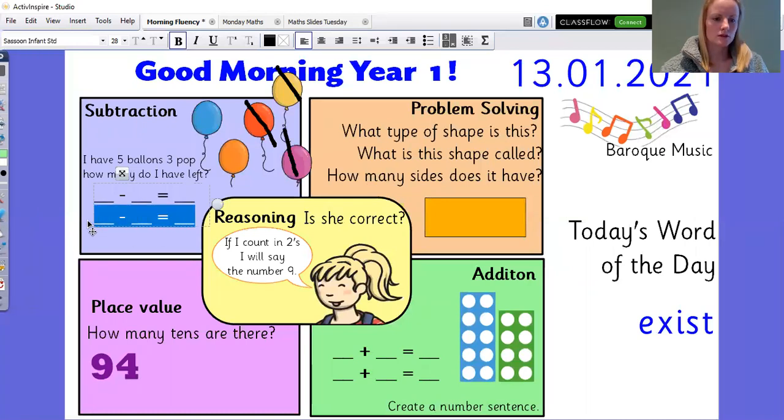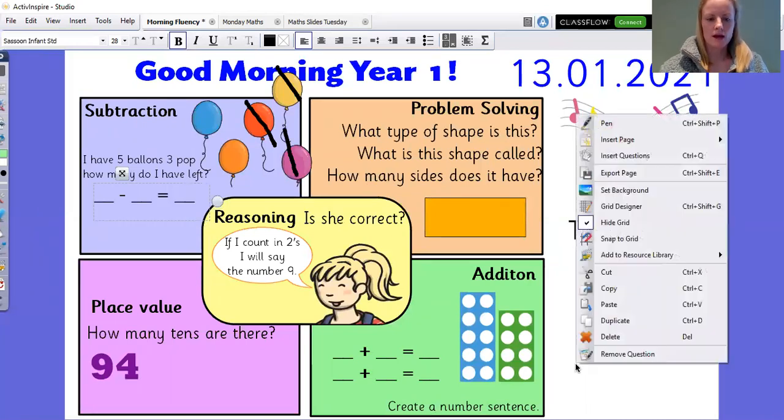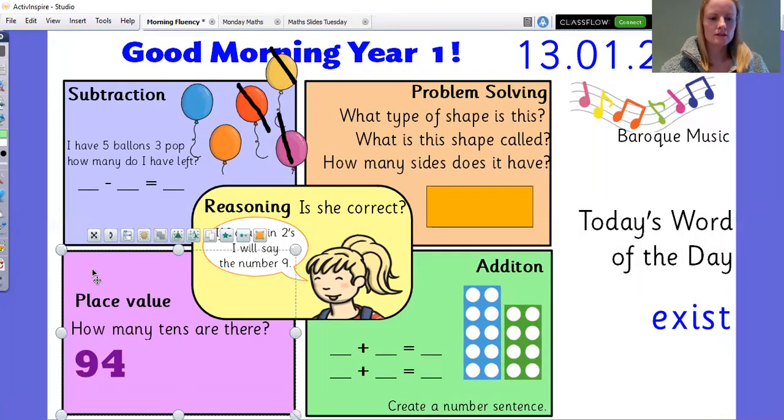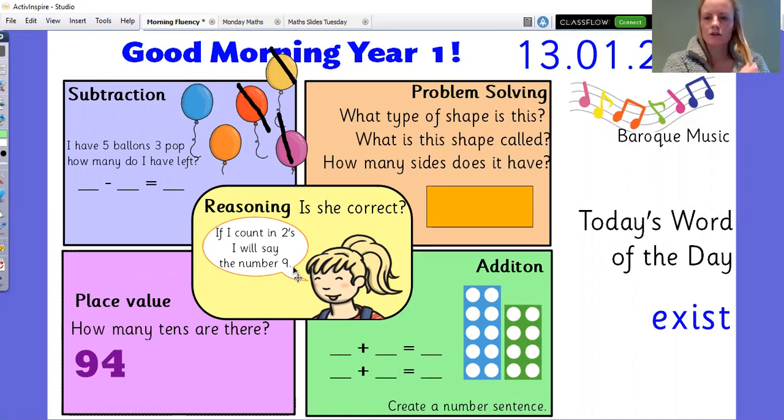Let's just write it as one way. And then your reasoning question is if I count in twos, I will say the number nine. So just practice counting in two.